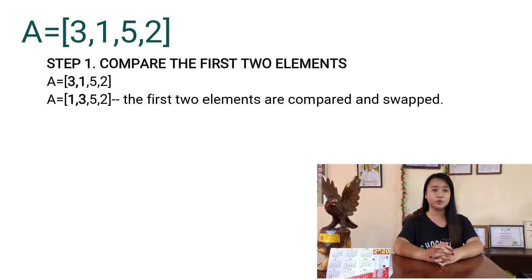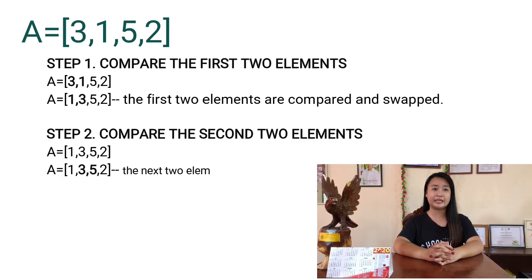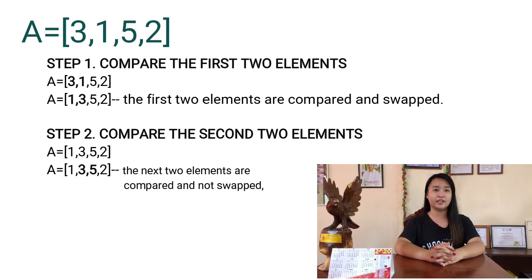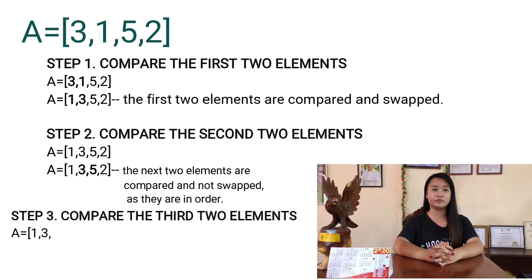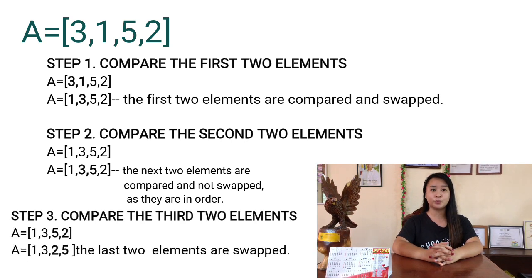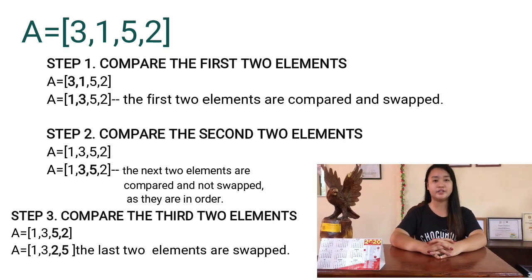Step 2: [1, 3, 5, 2]. The next elements, 3 and 5, are compared and not swapped as they are in order. Step 3: [1, 3, 2, 5]. The last two elements, 2 and 5, are swapped. We're done with the first iteration of the array.